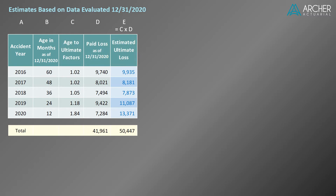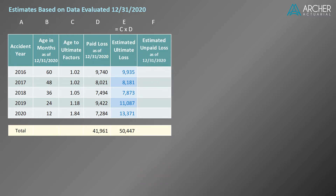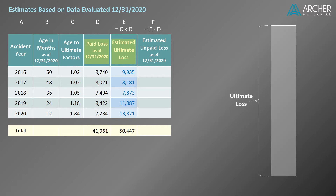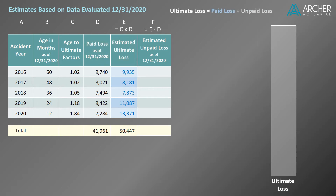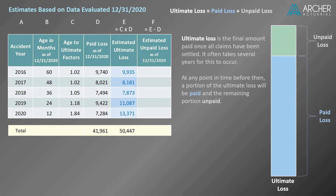Next, let's calculate the corresponding estimated unpaid loss. This equals our ultimate loss less the paid loss as of 12/31/2020. To help see why this is the case, consider this graph where the bar represents ultimate loss. Ultimate loss equals paid loss plus unpaid loss — graphically it looks like this. Here's one way to think of it: ultimate loss is the final amount paid once all claims have been settled.